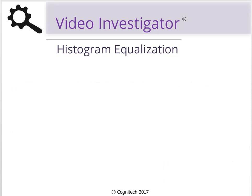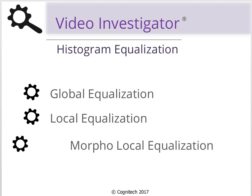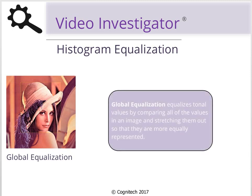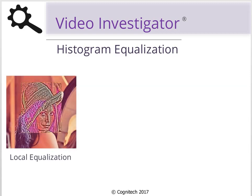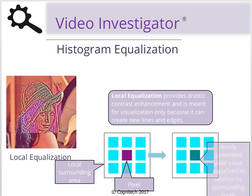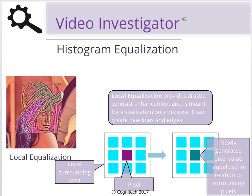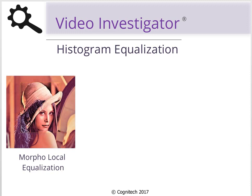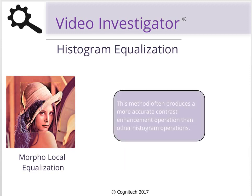Video Investigator's Histogram Equalization Filter provides three distinct methods of equalization: Global Equalization, Local Equalization, and Morpho Local Equalization. Global Equalization stretches contrast expressed in an image to the best level possible with the given brightness possibilities of that image. Local Equalization analyzes the local area surrounding each pixel and computes a new value for that pixel more closely related to its neighbors' tonal values. Morpho Local Equalization also analyzes the local area of pixels, but unlike Local Equalization, it improves contrast without creating new features such as new lines or edges.